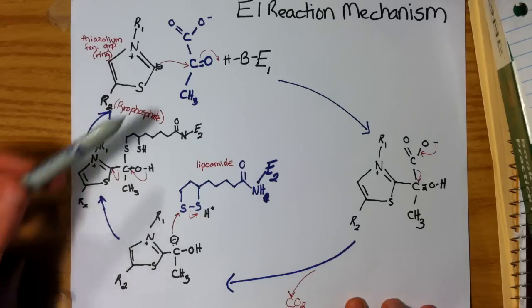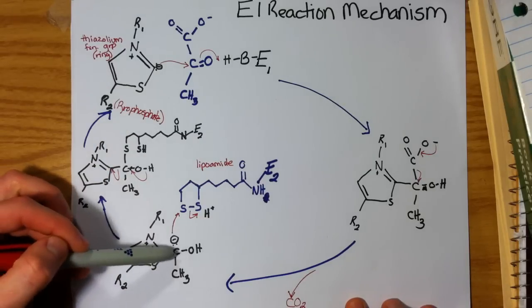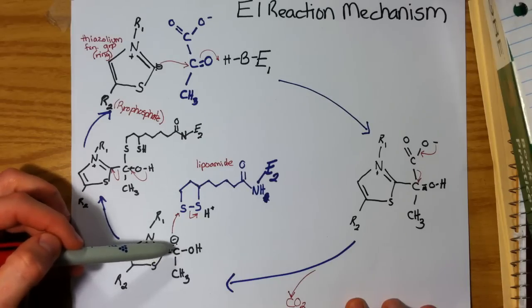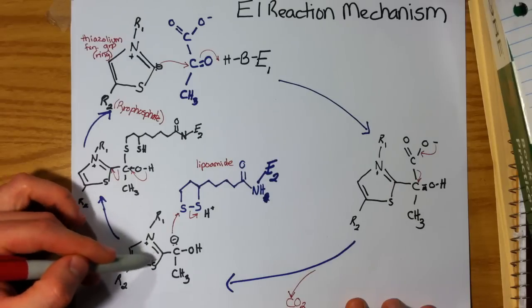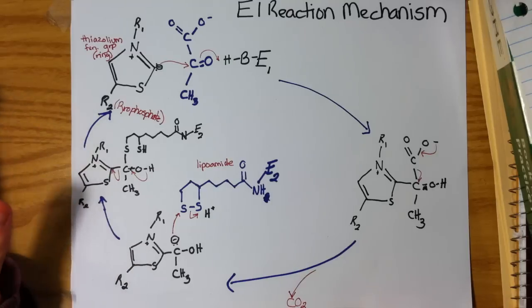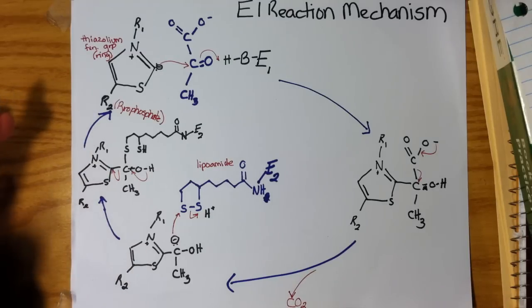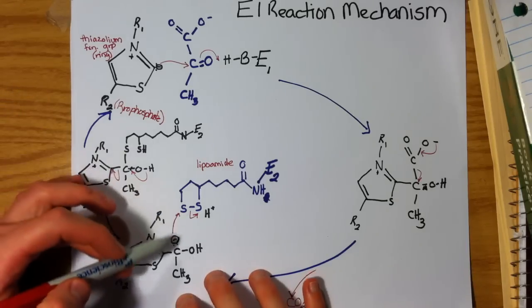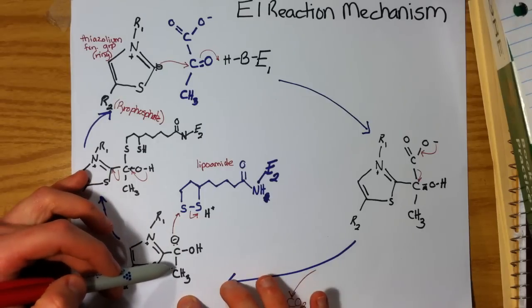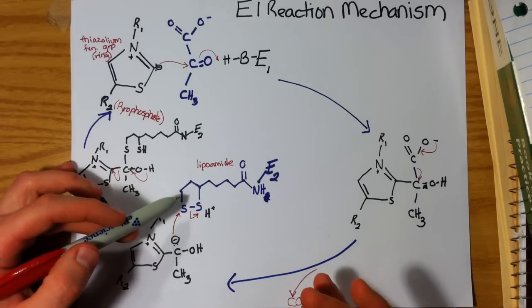And again, similarly to up here, we can maintain this negative charge on this carbon because of the balance it receives from the electron sink properties of the thiazolium ring. So TPP has done its purpose. It has removed carbon dioxide, the first carbon from this molecule, allowing us to have our acetyl group, which we can then transfer onto enzyme complex II.